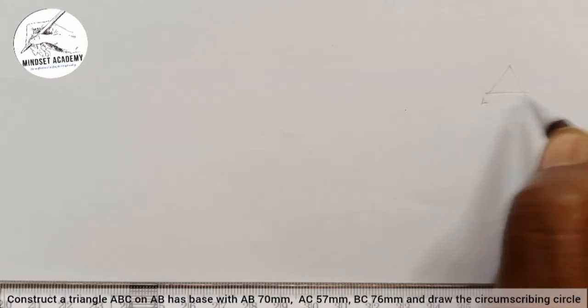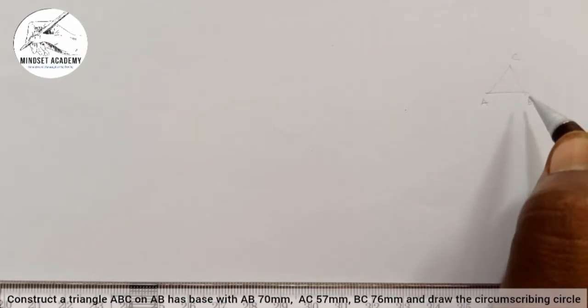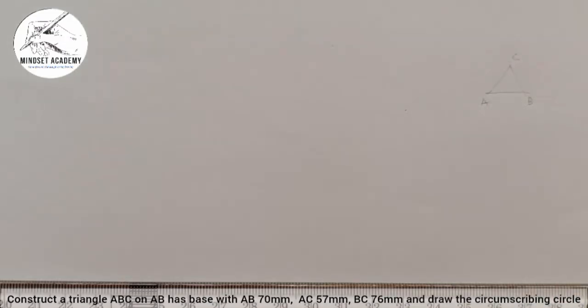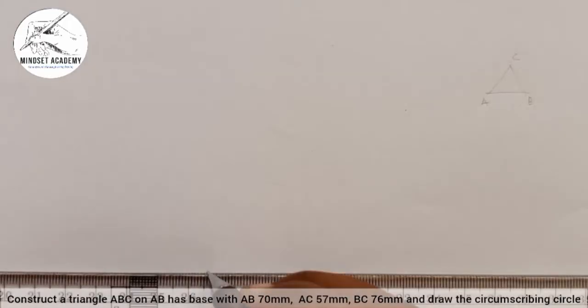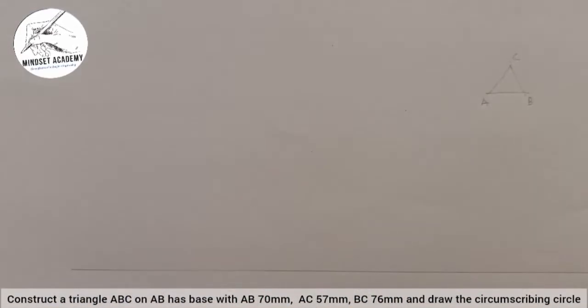This is AB, we will call AB the base and this is point C. The first thing we will do is draw AB which is 70mm. So I am going to draw a faint line first. And I will pick a point on that line here, I will call that point A.